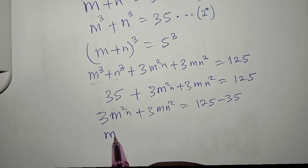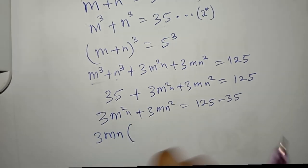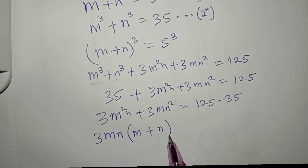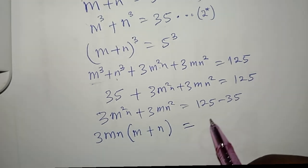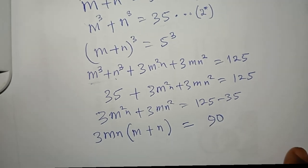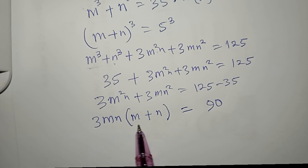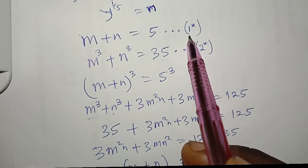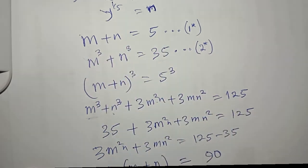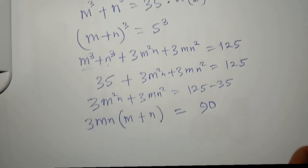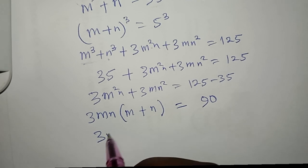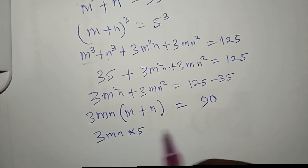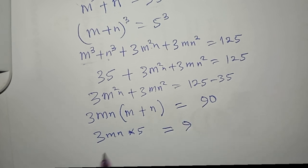Now 3mn is common, so I factorize: 3mn(m + n) = 90. From equation 1-star, m + n = 5, so I replace that, giving 3mn × 5 = 90.